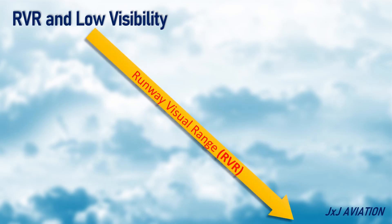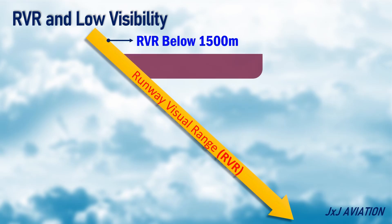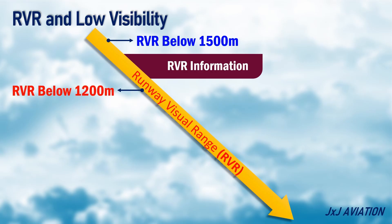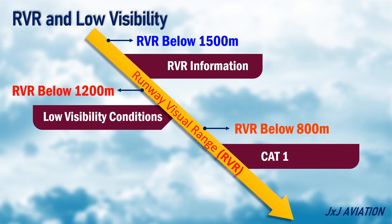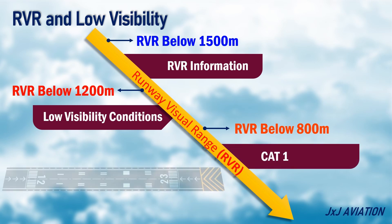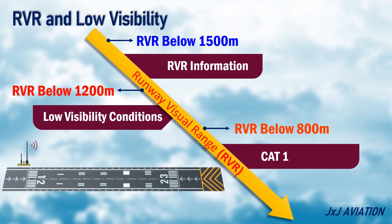RVR and low visibility. RVR information is provided when the RVR falls below 1,500 meters. When the RVR falls below 1,200 meters, it is called low visibility conditions. When the RVR reduces below 800 meters, the operation category becomes CAT-1. For this operation, RVR information must be provided for the touchdown zone.